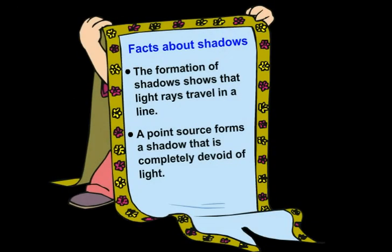Now the formation of shadows shows that light rays travel in a straight line. And you know something? A point source, a source of light which is small as a point, it forms a shadow that is completely devoid of light.